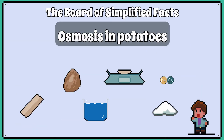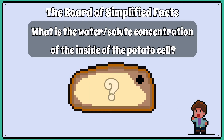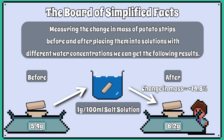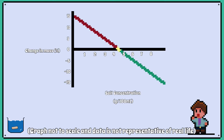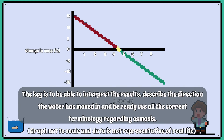We will now look at an experiment that demonstrates what happens when we put plant cells into different concentrations of water. The goal is to find out what is the water solute concentration of the inside of the cell. Measuring the change in mass of potato strips before and after placing them into solutions with different water concentrations, we can get the following results. You can easily get a similar graph in an exam question but just with a different context. The key is to be able to interpret the results, describe the direction the water has moved in and be ready to use all the correct terminology regarding osmosis.